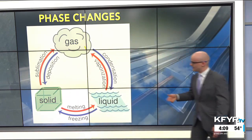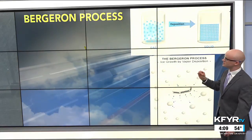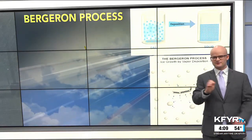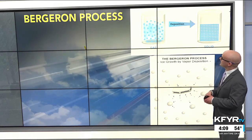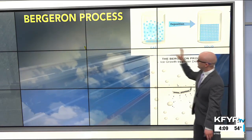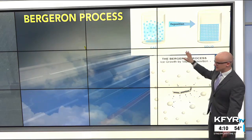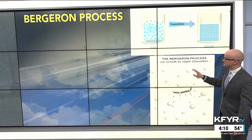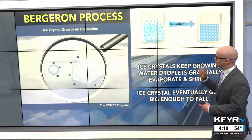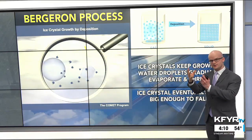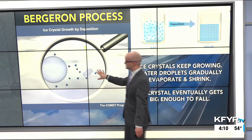We've talked about evaporation and condensation, but an important one here is deposition. You might not have heard of that since your high school science class — it goes from a gas to a solid, skipping the liquid phase. The Bergeron process is ice growth by deposition: going from that gas, the water vapor, right to the solid of the ice crystal.